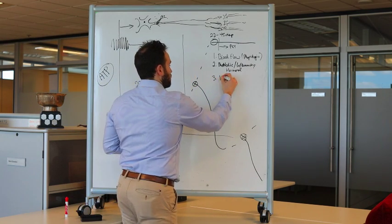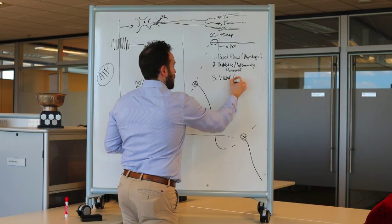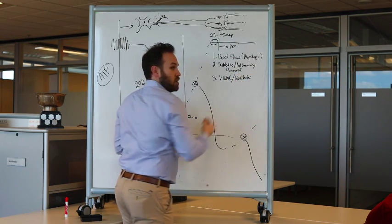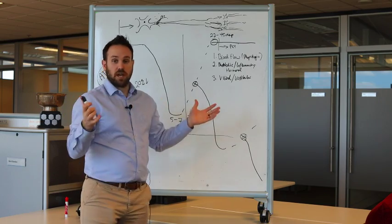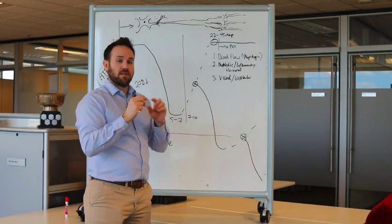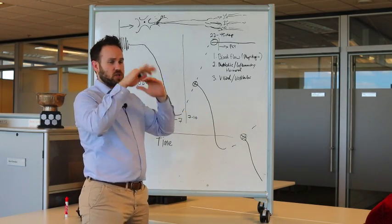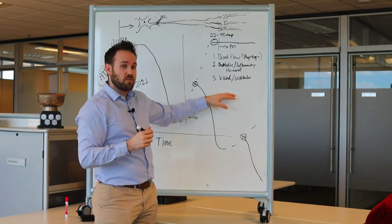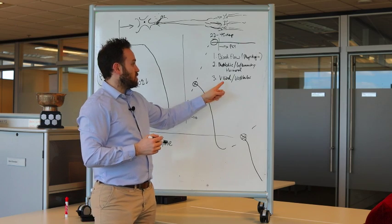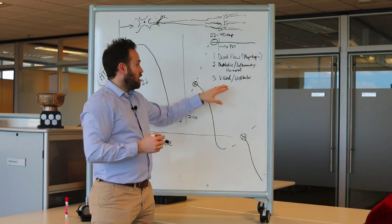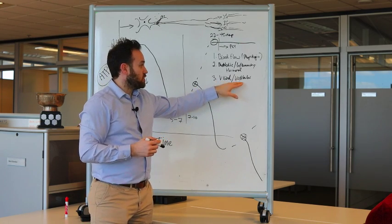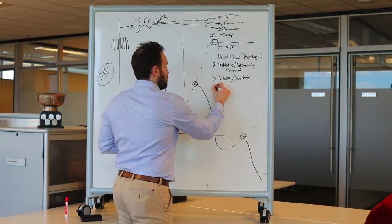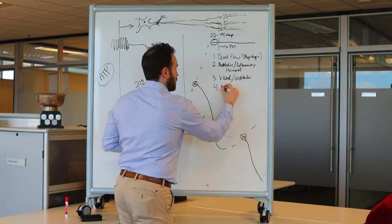Number three is the visual system or the vestibular system. Now I put those together because they often work together. So people might feel off balance, they might feel dizzy, they might feel they have this visual perceptive issue, they might have trouble reading even, even some cognitive problems where people can't concentrate or focus, sometimes maybe due to a visual problem. But oftentimes visual problems also include the vestibular system and vice versa. Vestibular problems include the visual system and then also they also include the neck.